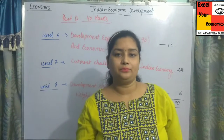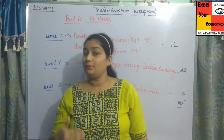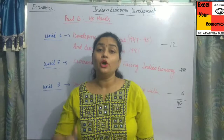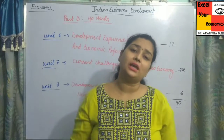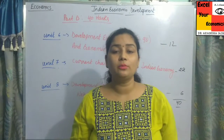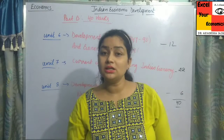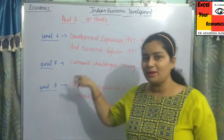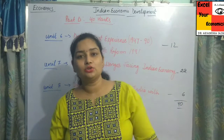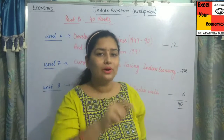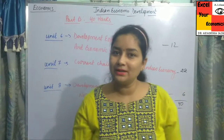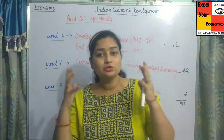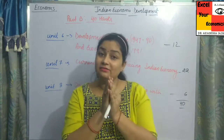Along with planning, there were several challenges because of which planning failed. These are the current challenges of our economy — poverty, unemployment, rural development, human capital, infrastructure, and environment. These six chapters form our 7th unit, through which we will understand the current problems of our country and how far we need to grow.